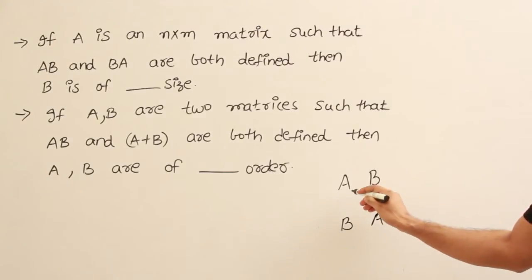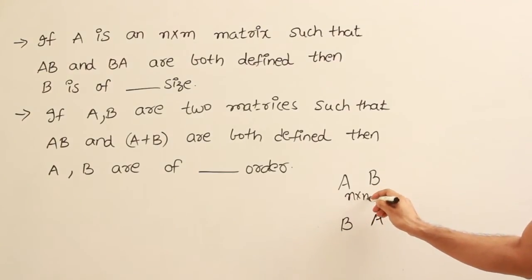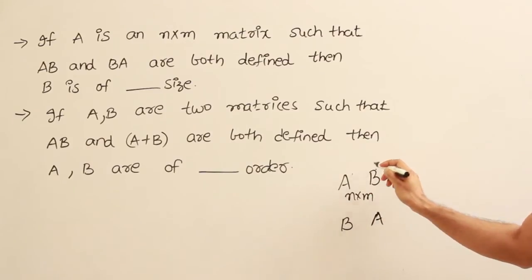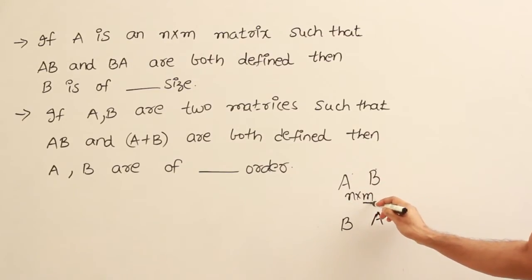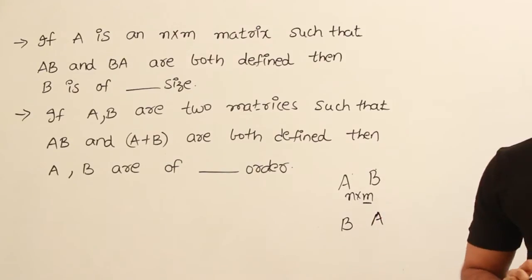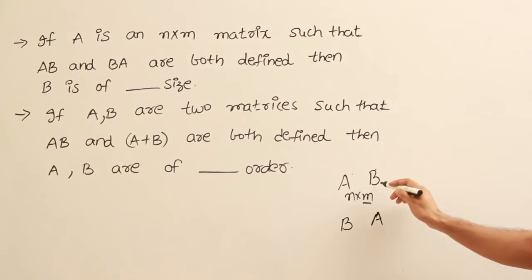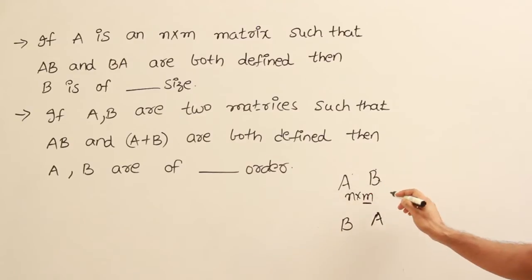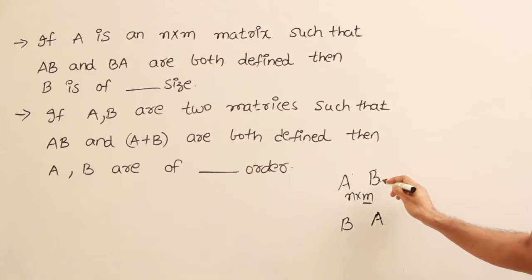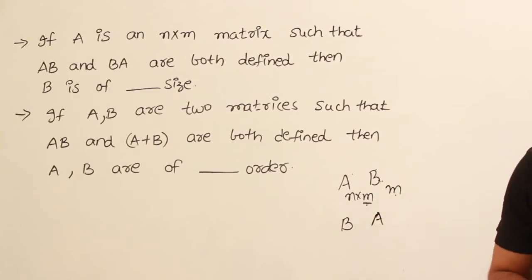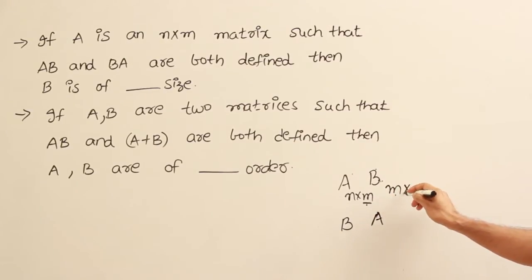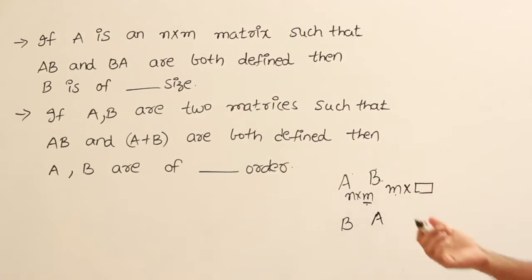Here A is of size n by m. If AB has to be possible, the number of columns in A should be equal to the number of rows in B. So B must have m rows — the number of rows in B should equal the number of columns in A. The number of columns in B I don't know yet; it can be anything at this point.